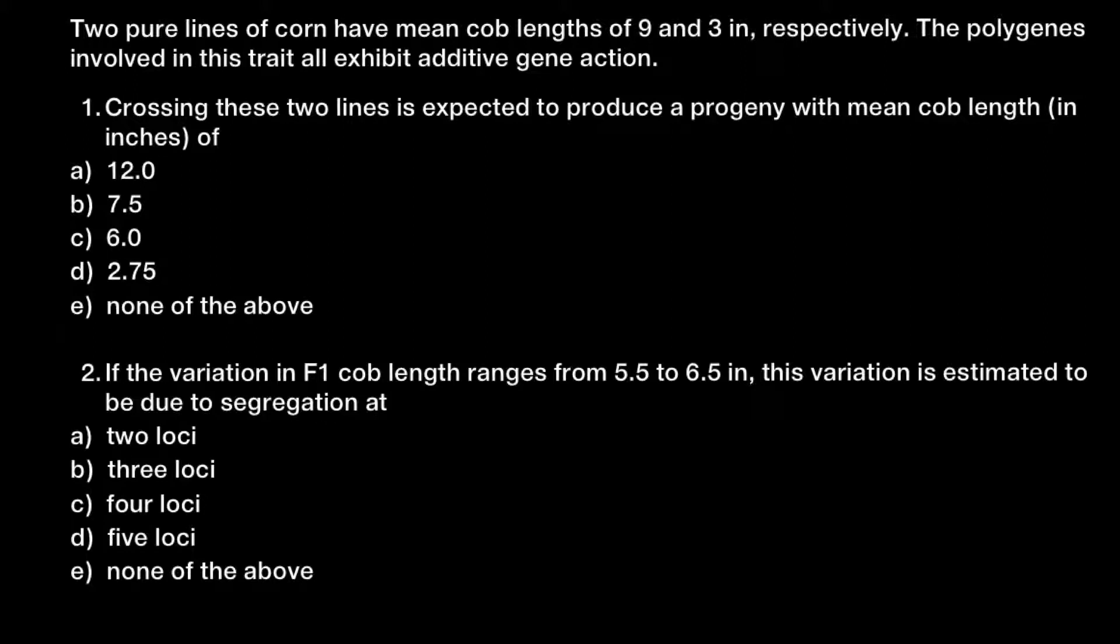Two pure lines of corn have mean cob lengths of 9 and 3 inches respectively. The polygenes involved in this trait all exhibit additive gene action. The first question is, crossing these two lines is expected to produce a progeny with mean cob length in inches of... and here are the five answers to choose from.